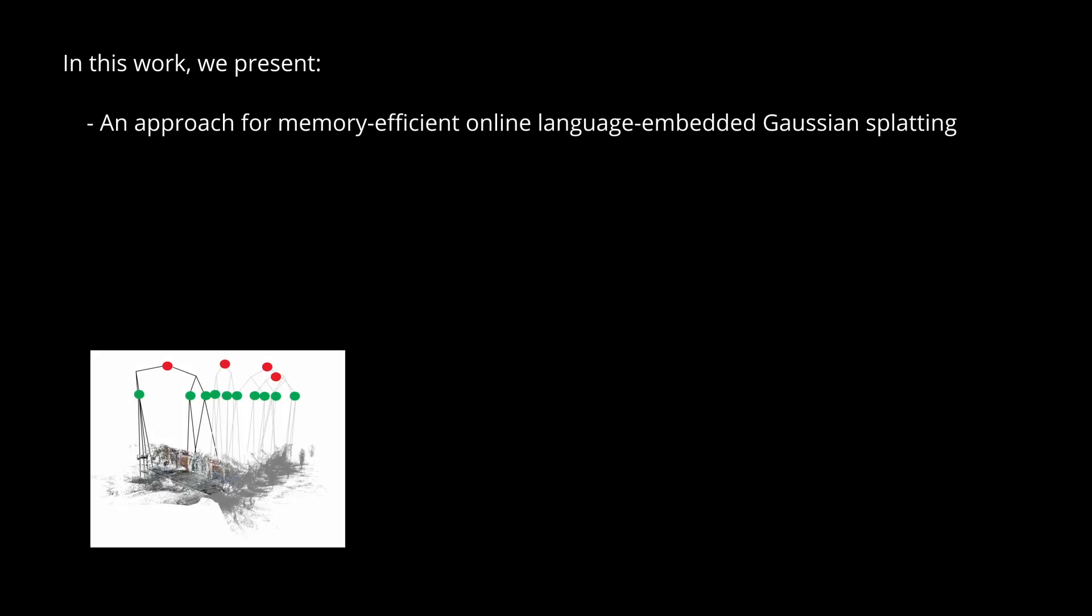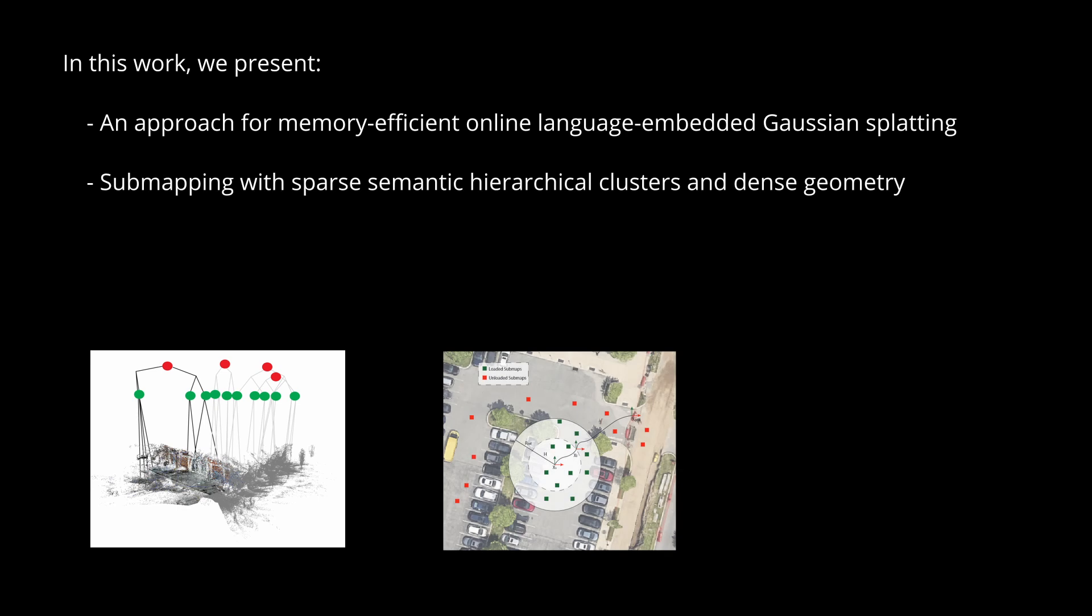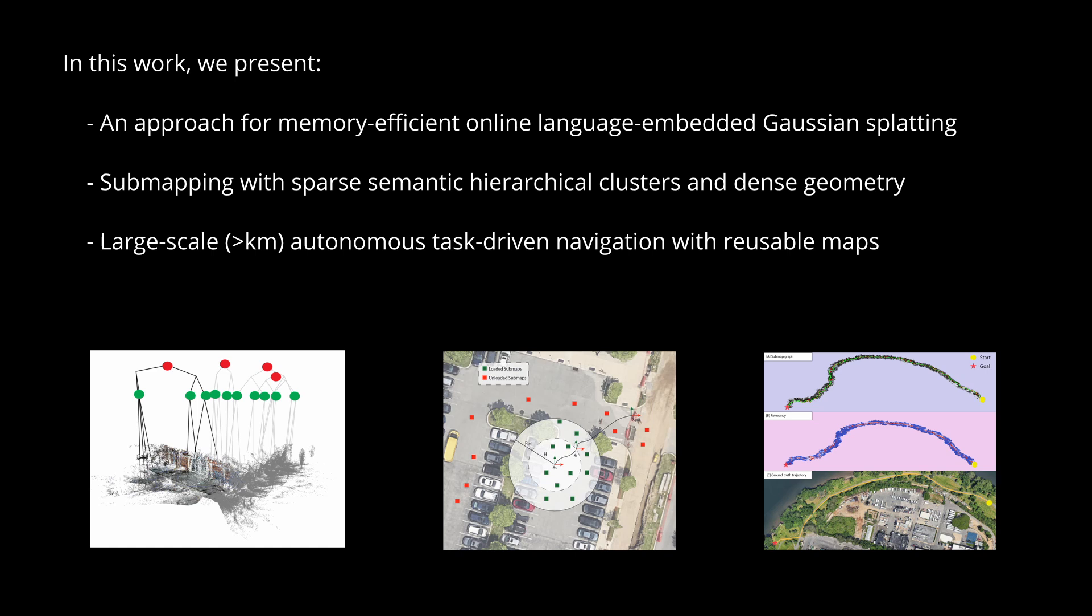In this work, we present an approach for memory-efficient online language-embedded Gaussian Splatting, sub-mapping with sparse semantic hierarchical clusters and dense geometry, and large-scale autonomous task-driven navigation with reusable maps.